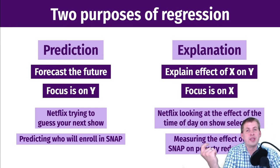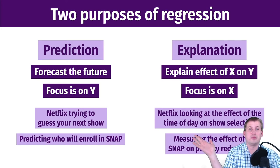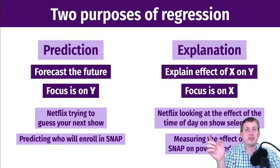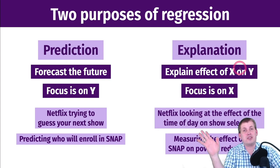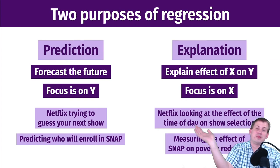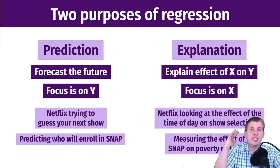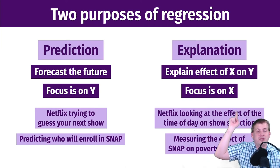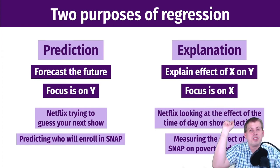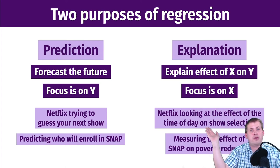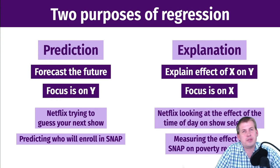In prediction or machine learning, they throw in as many columns as they can to boost model performance. This semester we're going to be in the estimation or explanation world — trying to get exact pathways, focusing mostly on the X, not on the outcome. That is the difference between these two worlds of regression.